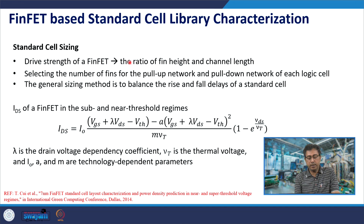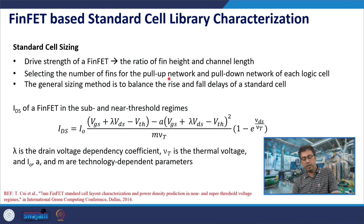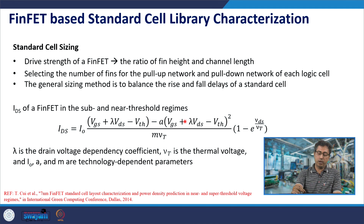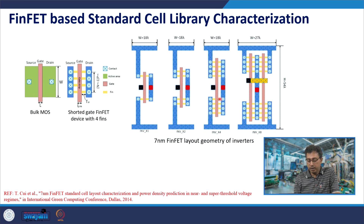The drive strength of a FinFET device is determined by the ratio of fin height and channel length. We assume the top gate is inactive, so fin height determines surface inversion as well as bulk inversion, and therefore current drive strength is determined by fin height and channel length. The number of fins, as seen in the layout, determines the WP/WN ratio — WP is determined by the number of fins, and WN is proportional accordingly, for example with 4 fins.